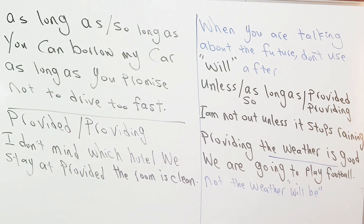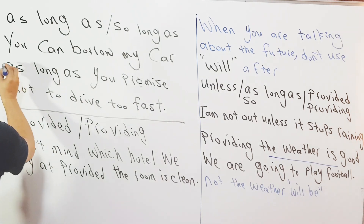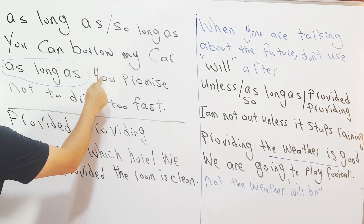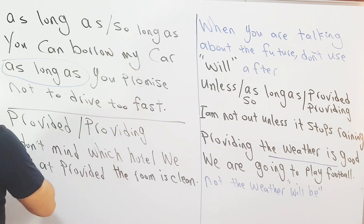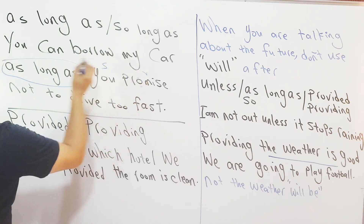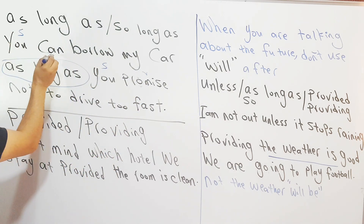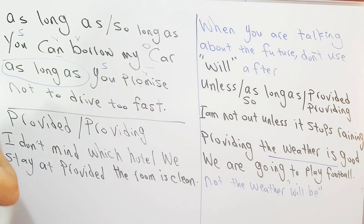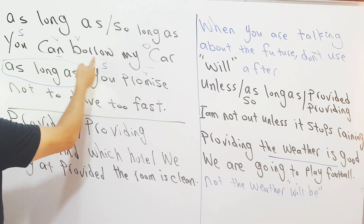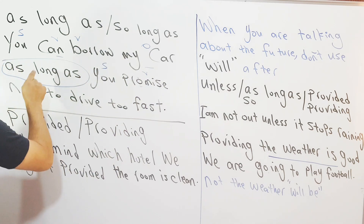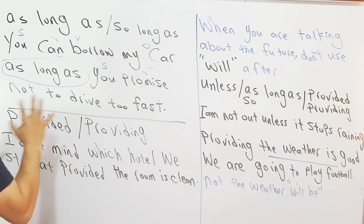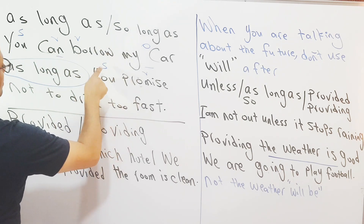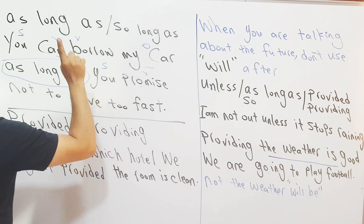ركز على 'as long as' - أنني وضعتها ما بين جملتين - two sentences. الجملة الثانية: 'You promise' - فاعل من جديد وفعل. يعني هنا بادئ الجملة بفاعل ثم يأتي الفعل. أنت تستطيع أن تستعير سيارتي - شرط - طالما - شريطة - يعني هي معنى واحد - طالما إنك أنت توعد - ثم بدأنا بجملة جديدة.